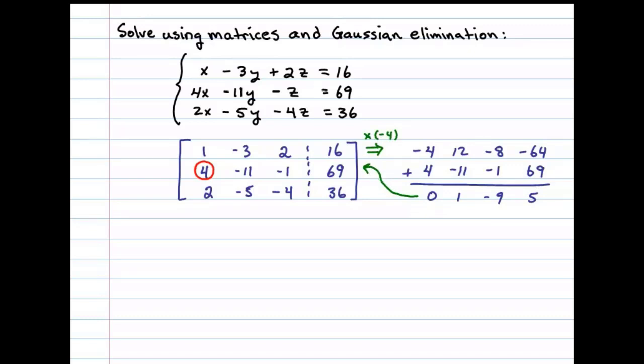Next we need to replace the first element here of the third row with a 0. To do that, we'll multiply the first row by negative 2, and that'll leave us with negative 2, 6, negative 4, and negative 32.